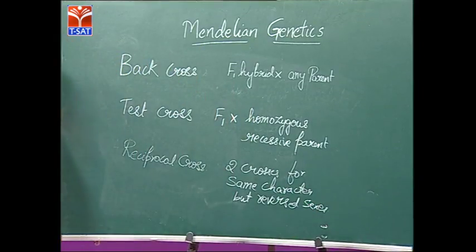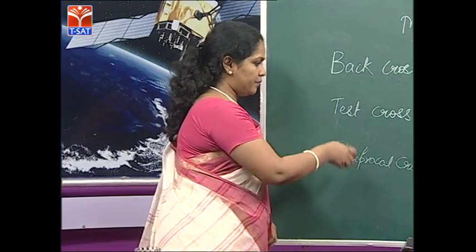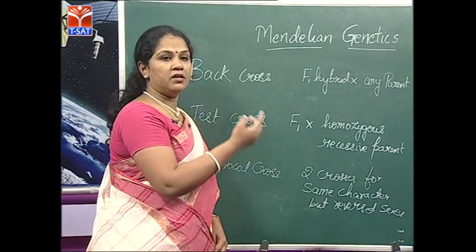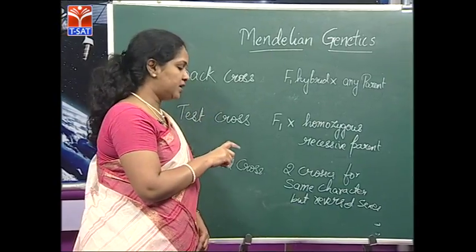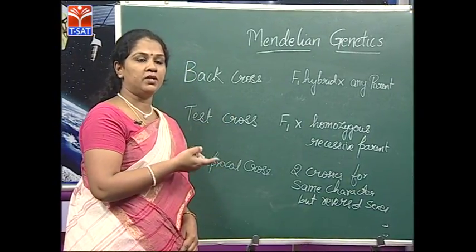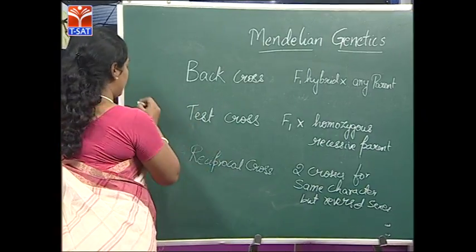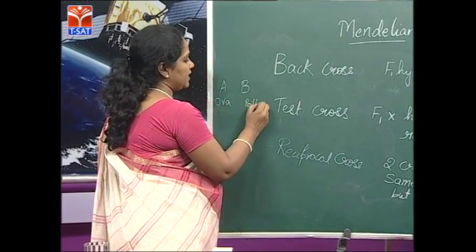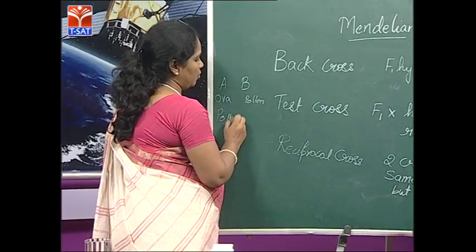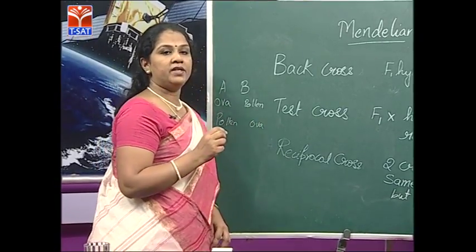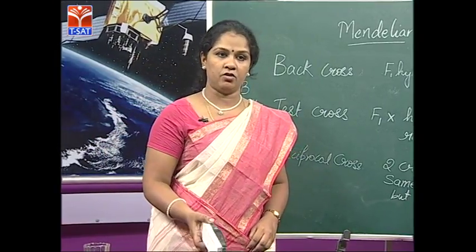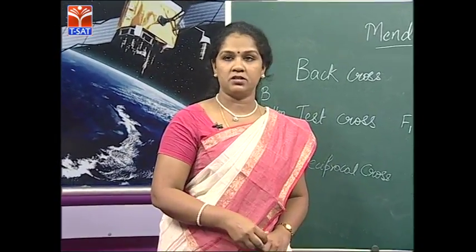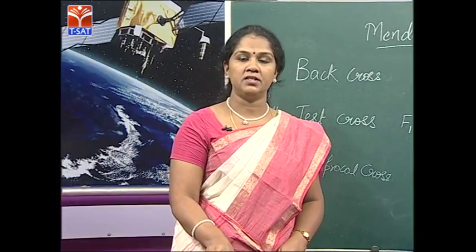Reciprocal cross involves two crosses for the same character but with reversed sexes. For example, if you take stamens from one plant and ovum from the other, in the second cross you determine the same character but the sexes are reversed — pollen from plant A with ova of plant B in one cross, and reversed in the second. This is to determine whether the plant shows any maternal effect. The pea plant chosen by Mendel showed neither maternal inheritance nor blending inheritance.